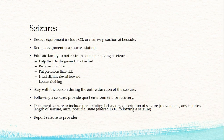For seizure precautions, make sure rescue equipment is at the bedside, which includes O2, oral airway, and suction. Have their room assignment near the nurses' station, and educate any family members. They need to know not to restrain somebody who's having a seizure. If the person is having a seizure and not in bed, show them how to lower the patient safely to the ground, remove any furniture that may get in the way, put the patient on their side in a recovery position, head slightly flexed forward, and loosen any clothing.